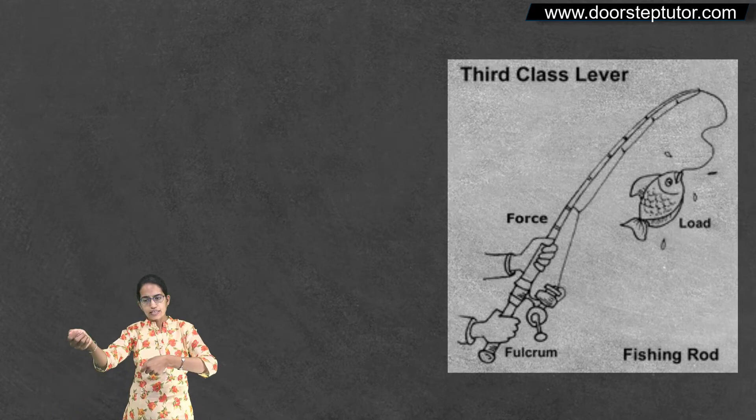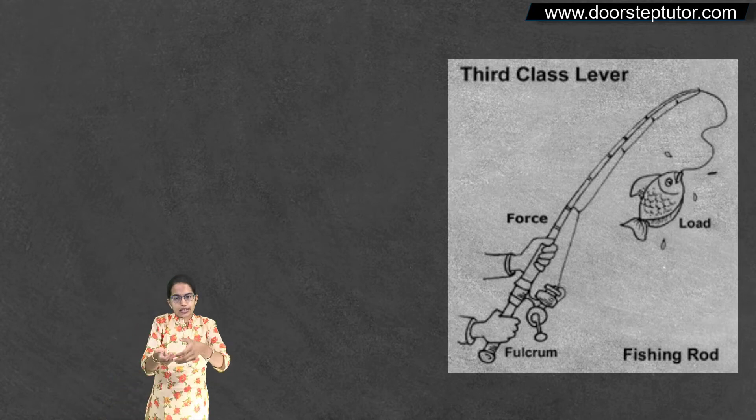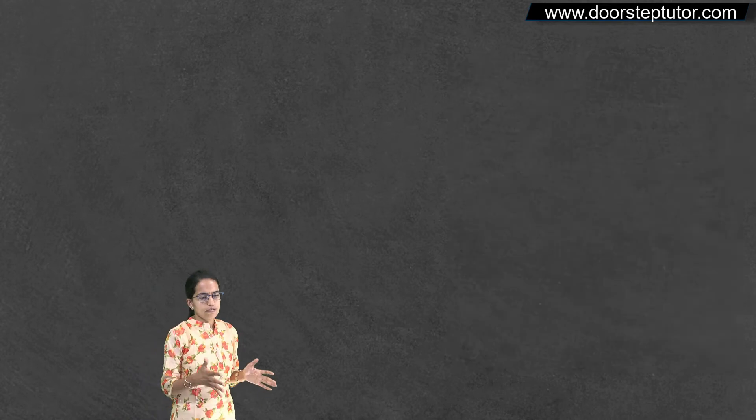So at one end is the load where the fish would be actually caught and the other end is the fulcrum. And the effort is being applied in the middle of it. So that's an example of class 3 lever.